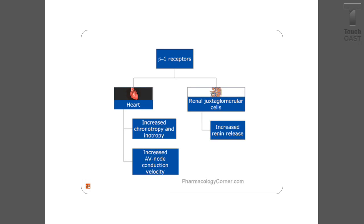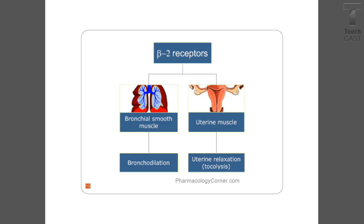Beta-1 is located in your heart and helps increase the rate, conduction, and contractility of your heart. Beta-2 is found on the smooth muscles of your lungs — it dilates your bronchioles as well as your skeletal blood vessels. The last receptor, dopaminergic, is located in your renal, mesenteric, and cerebral arteries, and when released it causes dilation of the coronary, mesenteric, and renal blood vessels.